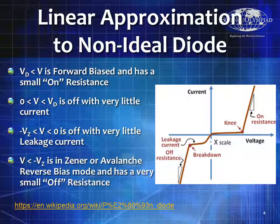If the voltage is less than the forward bias voltage but greater than zero, it's off — very very low current, almost negligible. The point at which it's considered to go from off to on is sometimes referred to as the knee. If the voltage goes below zero but above the zener or avalanche reverse bias voltage, there is very little leakage current — it's referred to as leakage current because you're going backwards, so you're talking very very small amounts of current.